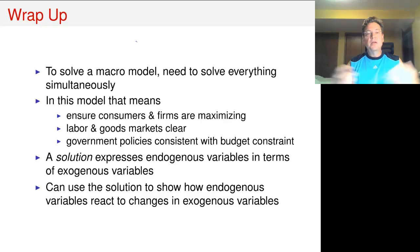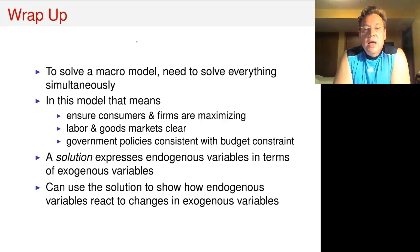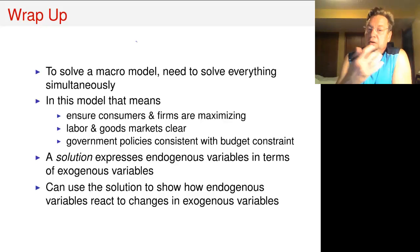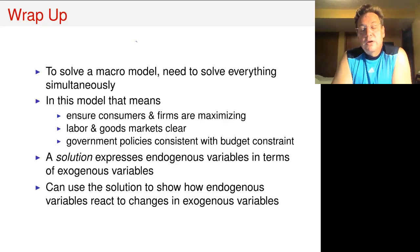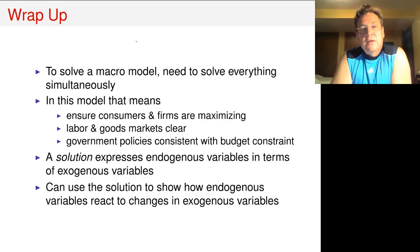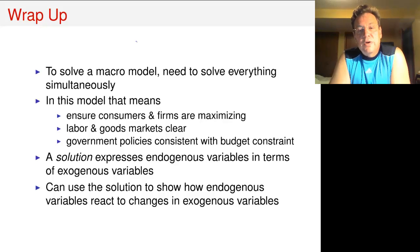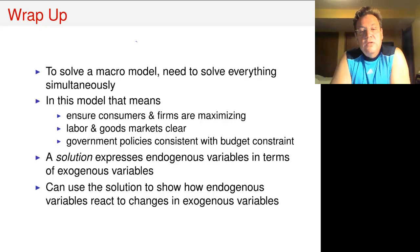So to wrap up, what we've done now is we've solved the macro model. That means consumers are maximizing utility, firms are maximizing profits, and we've cleared the labor and goods markets — the two markets operating in this model — with government policies that, although admittedly simple, are consistent with the government's budget constraint. This solution expresses endogenous variables in terms of exogenous variables, and we've used it to show how changes in two exogenous variables — government spending and productivity — affect the endogenous variables within this model.